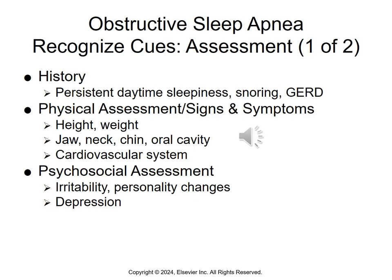Assessment history may include persistent daytime sleepiness, regardless of how long the patient has slept, snoring, and reports of GERD. Physical assessment should include height and weight, BMI calculation, and examination of the jaw, neck, chin, and oral cavity, looking for a crowded oropharynx and thickened neck. Cardiovascular and psychological assessments are also important, including evaluation for irritability, personality changes, depression, inability to concentrate, and morning headaches.